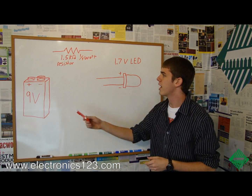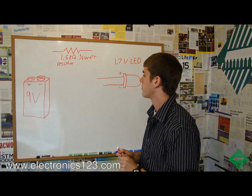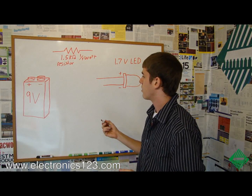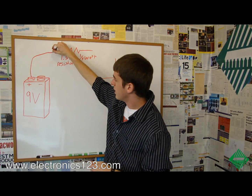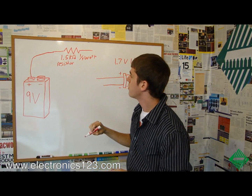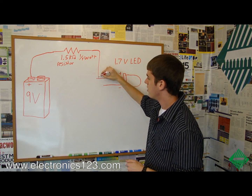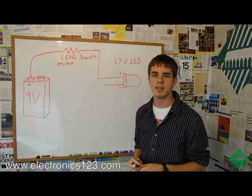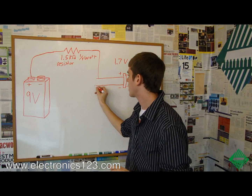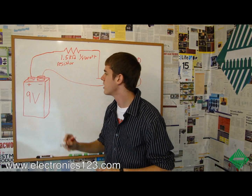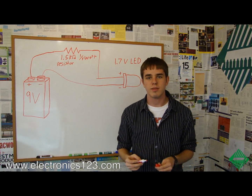So it's relatively simple. We have our 9 volt battery and our 1.5K quarter watt resistor. We take the positive side of the 9 volt battery and connect it into our resistor, then the other end of the resistor into the positive side — the anode — of our LED. And the negative side connects straight through to the battery. That's pretty much it — a relatively simple circuit.